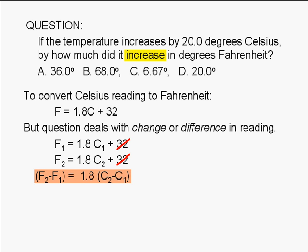It is customary to represent changes in quantities using the Greek letter delta. So we can see that the change in the Fahrenheit reading, delta F, is simply equal to 1.8 times the change in the Celsius reading, delta C.